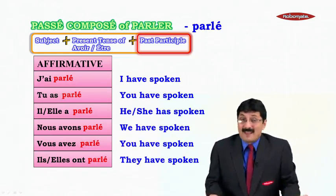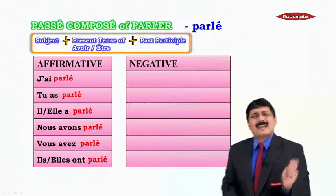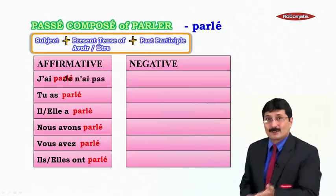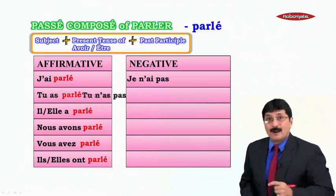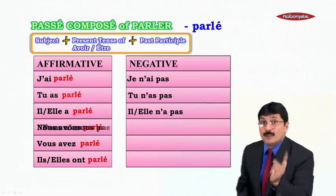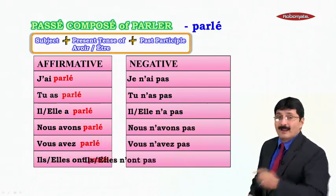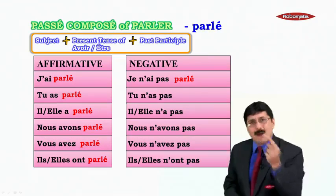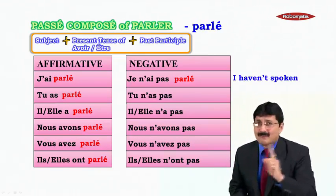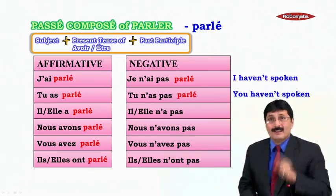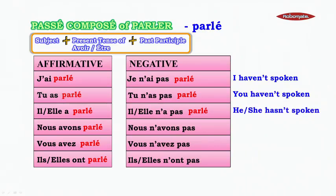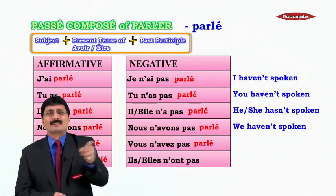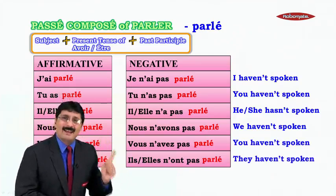Let's do the negative. The negative places 'ne' before the conjugated verb and 'pas' after the conjugated verb — the past participle is not affected. So: je n'ai pas parlé (I haven't spoken), tu n'as pas parlé (you haven't spoken), il n'a pas parlé / elle n'a pas parlé (he/she hasn't spoken), nous n'avons pas parlé (we haven't spoken), vous n'avez pas parlé (you haven't spoken), ils n'ont pas parlé / elles n'ont pas parlé (they haven't spoken).